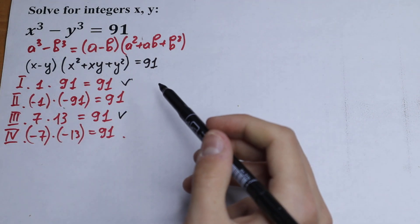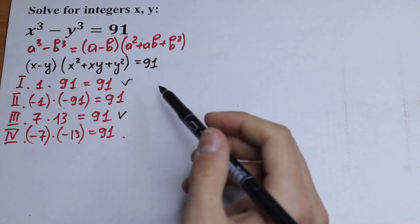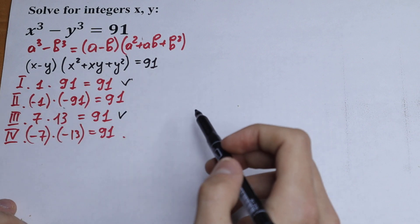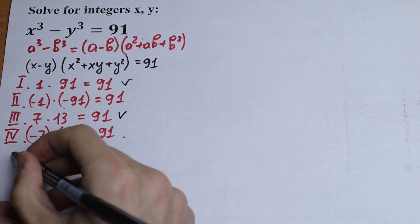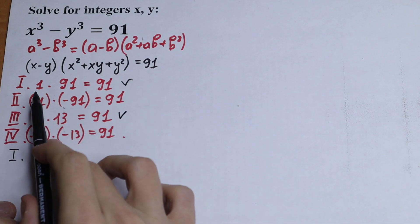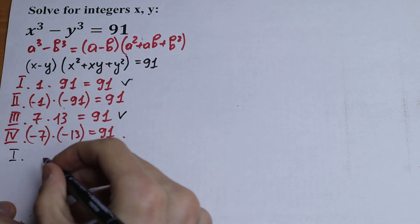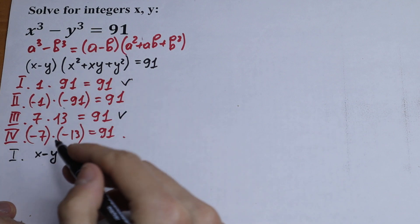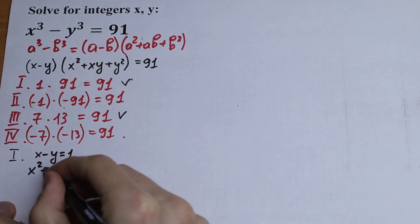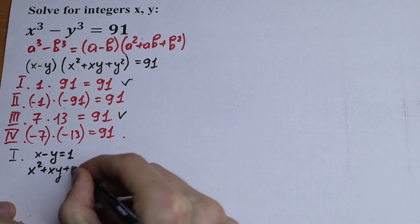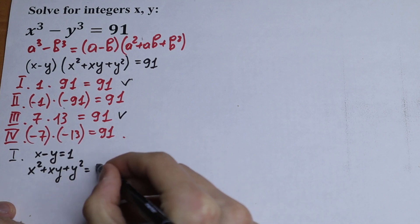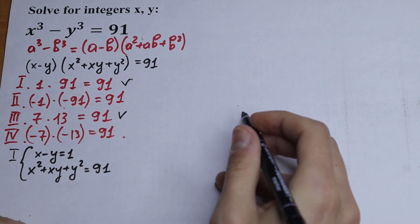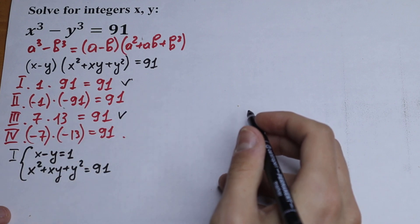So we will have two relevant systems of equations. Let's start with the first case: x minus y equals 1 and x² plus xy plus y² equals 91. This will be our first system of equations. Let's try to solve this.